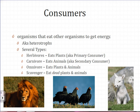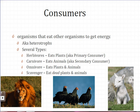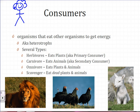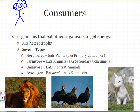We have carnivores that eat animals, such as this lion. We have omnivores, such as a human being, that eat both plants and animals. And we have scavengers. Scavengers eat dead plants and animals. An omnivore will hunt and kill live plants and animals for food, whereas a scavenger will hunt for things that are already dead. Scavengers cannot kill organisms on their own — they do not have the adaptations needed to do so.